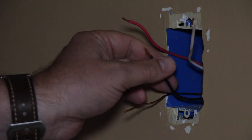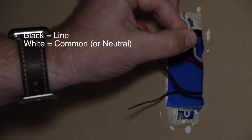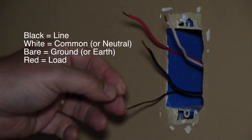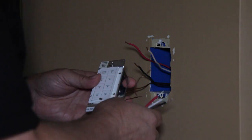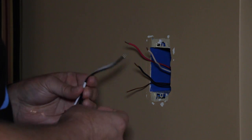I identify four wires. The black wire is line, the white is common, the bare one is ground, and the red one is the load that goes to the light. I'm lucky to see that these colors correspond exactly to the wires on the keypad, so my installation is trivial.